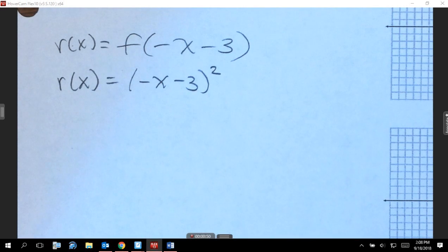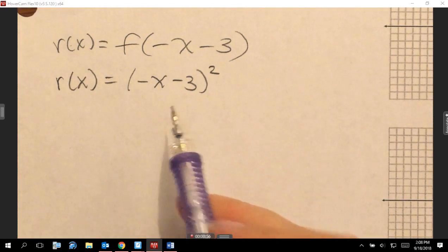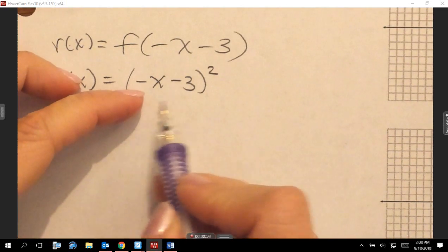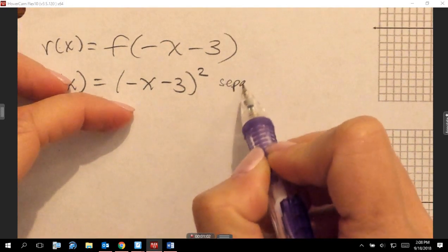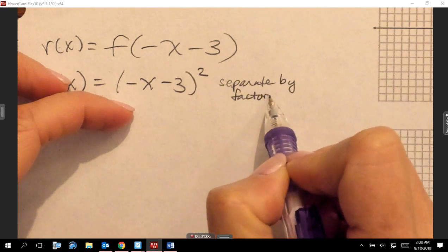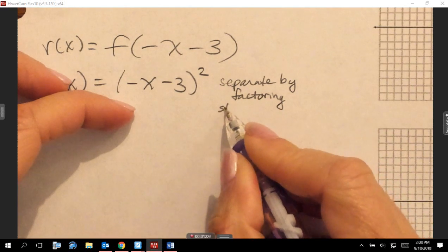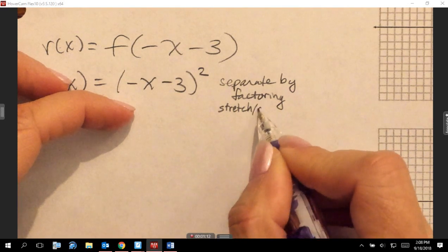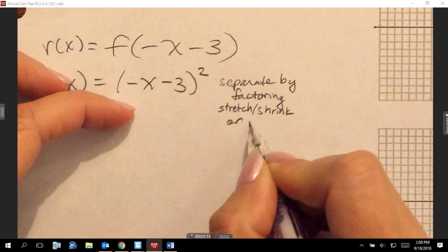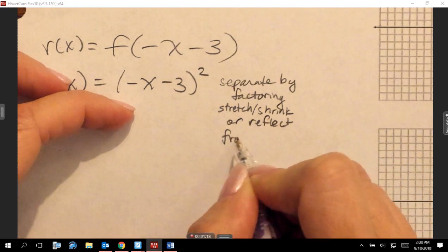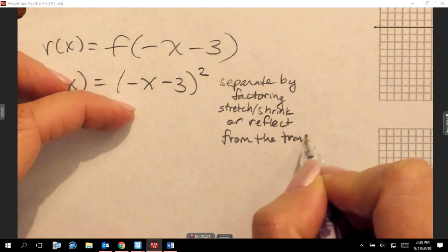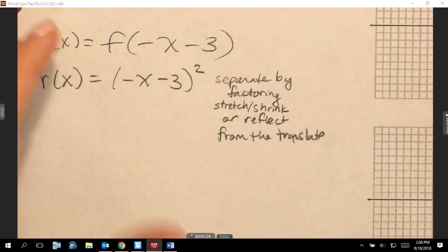But when you see that negative sign right there, you probably thought it would go to the right. So what happens is when we have multiple transformations, horizontal transformations, we just separate these transformations. You have to separate a stretch, shrink, or reflection from the translate.